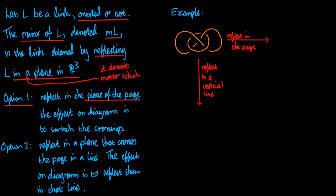What's the effect on the diagram? It's very simple. It's going to switch the crossings. So if you used to have a crossing that looked like this, then you'll end up with a crossing that looks like this and vice versa.